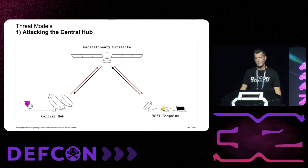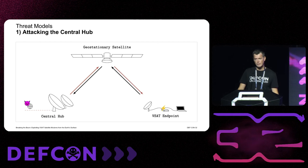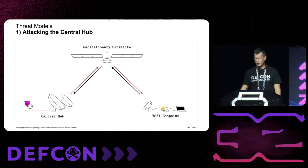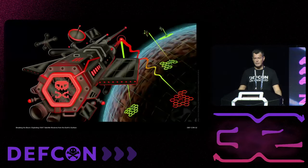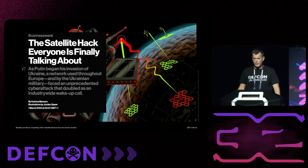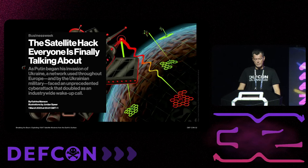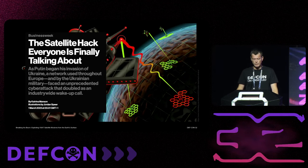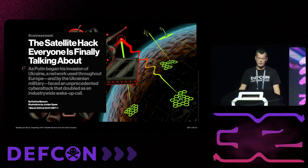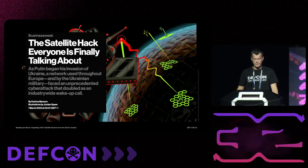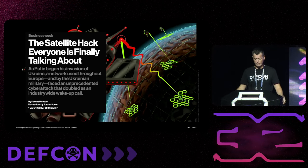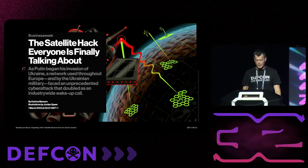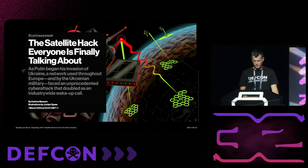Looking at the security of VSAT systems, we can consider three threat models. The first is an attacker trying to infiltrate from the internet through the central hub. This is what happened in February 2022, when on the same day Russia invaded Ukraine, an attack through the ground system deployed malicious firmwares to thousands of VSAT endpoints, rendering thousands of modems unavailable. This attack has been presented at DEF CON the last two years.